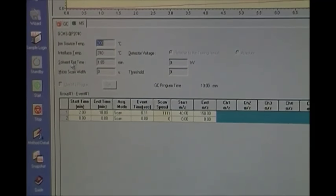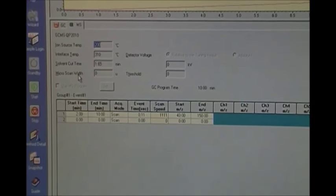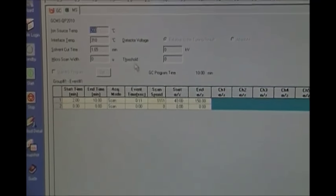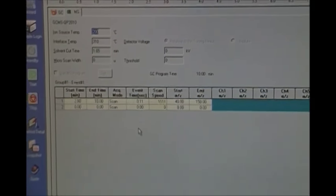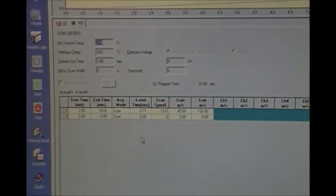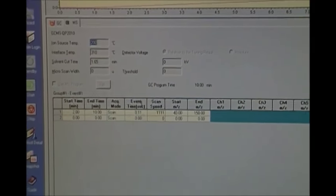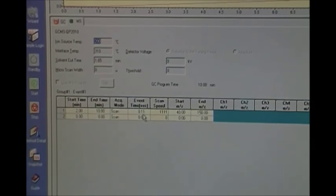So other than the cut time, we have our event time, which is right here. Our event time is essentially how often the mass spec is scanning the sample. So we're going to run a new scan every 0.11 second.